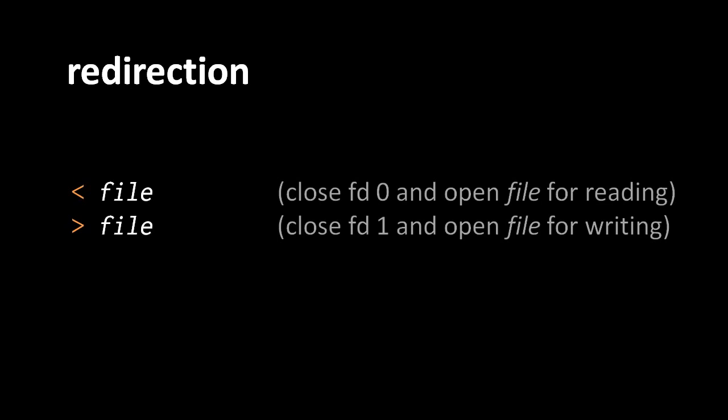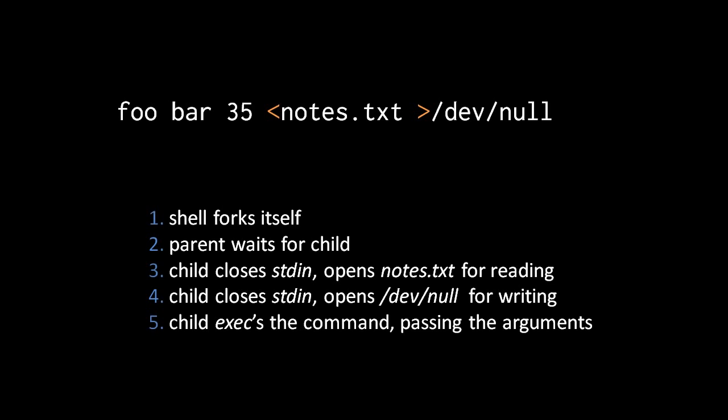I personally prefer to put redirections after all of the program arguments. Placing them elsewhere can be misleading because they seem to imply a kind of argument when they're not — they are not arguments to the program but a special trick the shell does before it even launches the program. For example, the command foo with arguments bar and 35 includes redirections for both standard in and standard out: standard in redirected from notes.txt and standard out redirected to /dev/null, a special UNIX file where data written to it is just discarded. This also explains why standard in and standard out are separate file descriptors — separate descriptors allow them to be redirected independently.